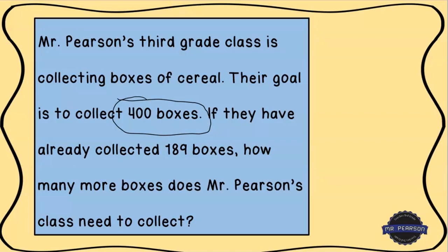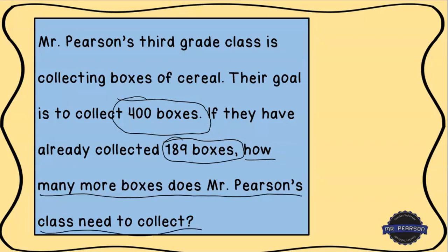It says here if they have already collected 189 boxes — that seems like an important number to know, so let's circle that one as well. We've circled 400 and we have circled 189. Now the next thing we need to do is underline our question. The question is: how many more boxes does Mr. Pearson's class need to collect? That's what we're trying to solve.